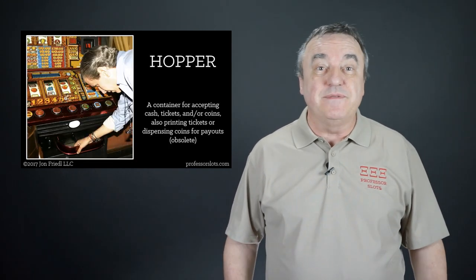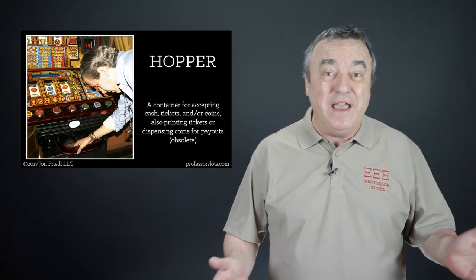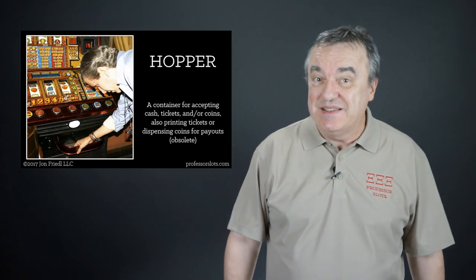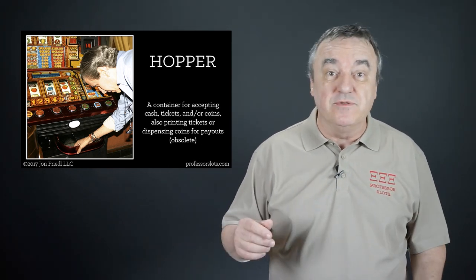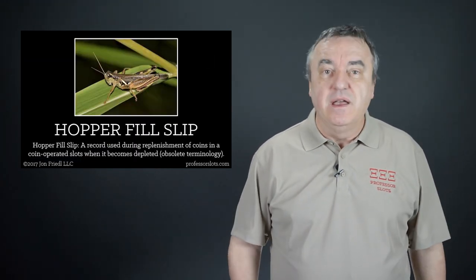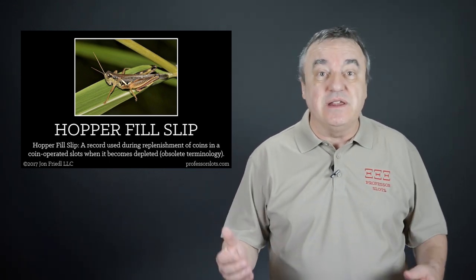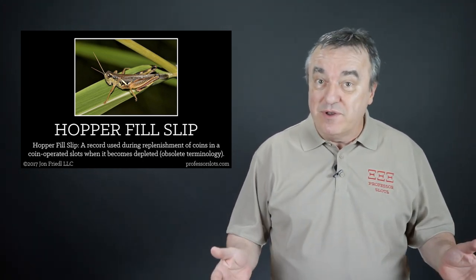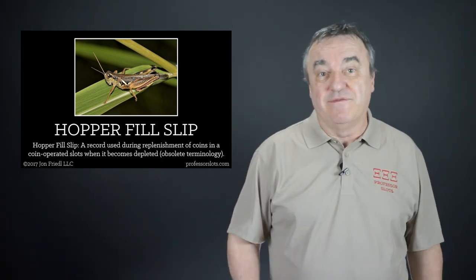Hopper: a container for accepting cash tickets and/or coins, as well as printing tickets or dispensing coins for payouts. Coin hoppers and ticket printers provide an immediately available payout when a hand pay isn't necessary. Slot machines originally having coin hoppers but later upgraded to ticket printers will often still have a vestigial coin hopper. Hopper fill slip: a record or log used during replenishment of coins in a coin-operated slot machine when it becomes depleted after sufficient payouts to players. It includes the amount, signatures of the employees involved, the slot machine number, slot machine location within the casino, and the date of occurrence.